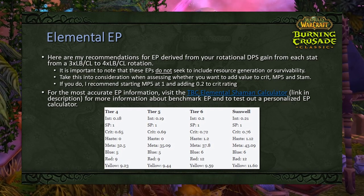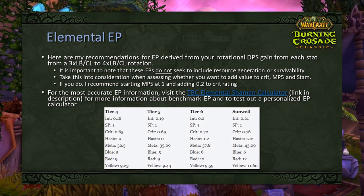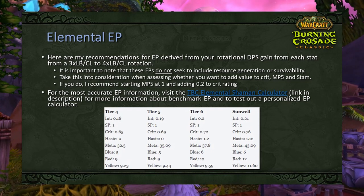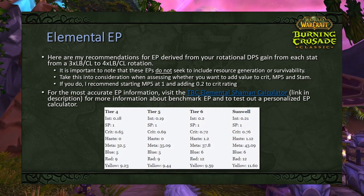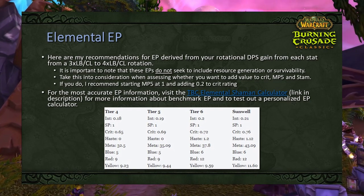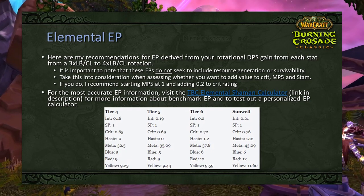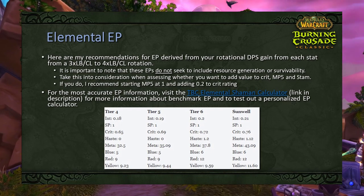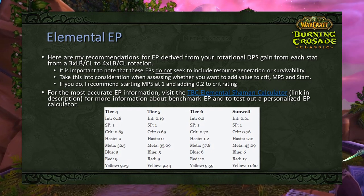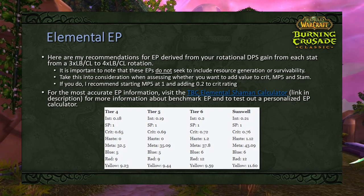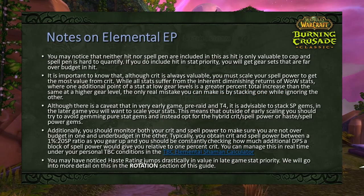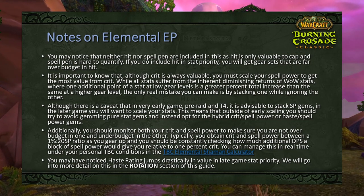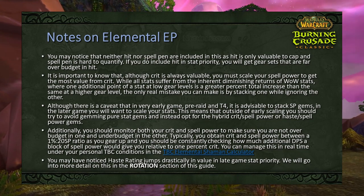Here are recommendations for EP values derived from rotational DPS gain, covering both the 3 LB/CL and 4 LB/CL rotations. These EPs do not include resource generation or survivability — adjust by starting mp5 at 1 and adding 0.2 to crit rating for more accuracy. The shaman calculator provides more detailed information. EP values are separated by content tier: tier 4, tier 5, tier 6, and Sunwell — intellect gains value as the game progresses, as does haste in tier 6 and beyond. Hit and spell pen are not included in the EP table as hit is only valuable to cap and spell pen is hard to quantify.